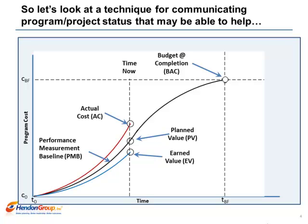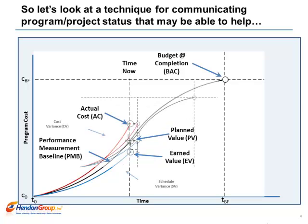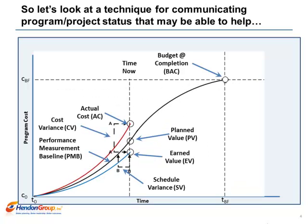From these three data points, you can calculate performance and variance. Cost variance is simply the difference between the earned value and actual cost at time now. A negative variance is over budget, a positive variance is under budget, and a zero variance is on budget.